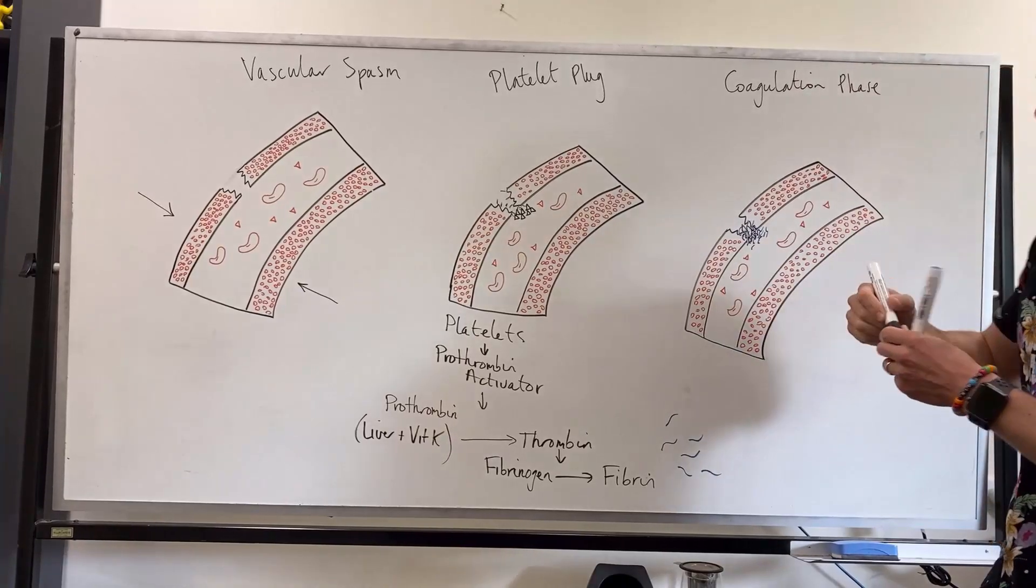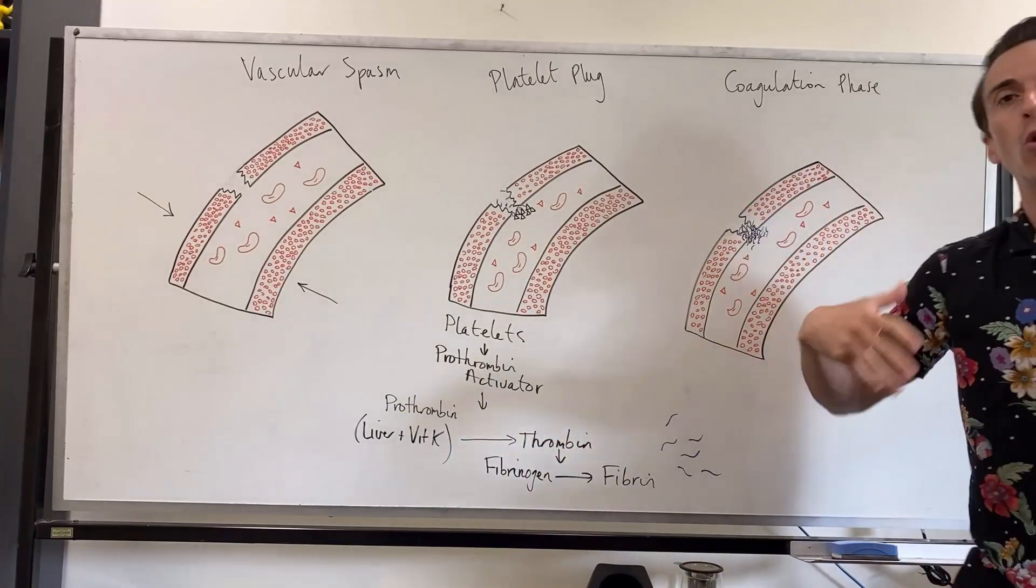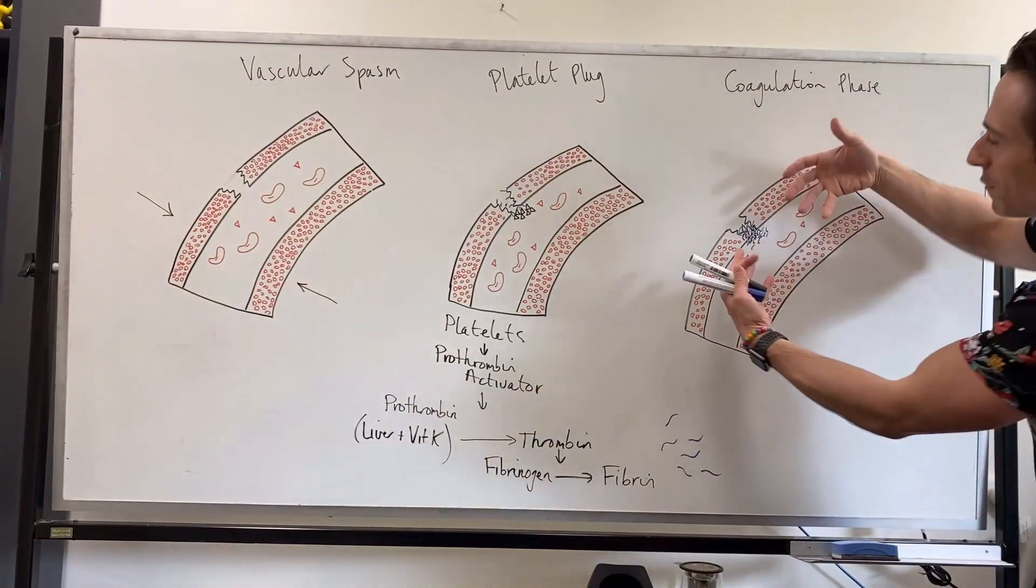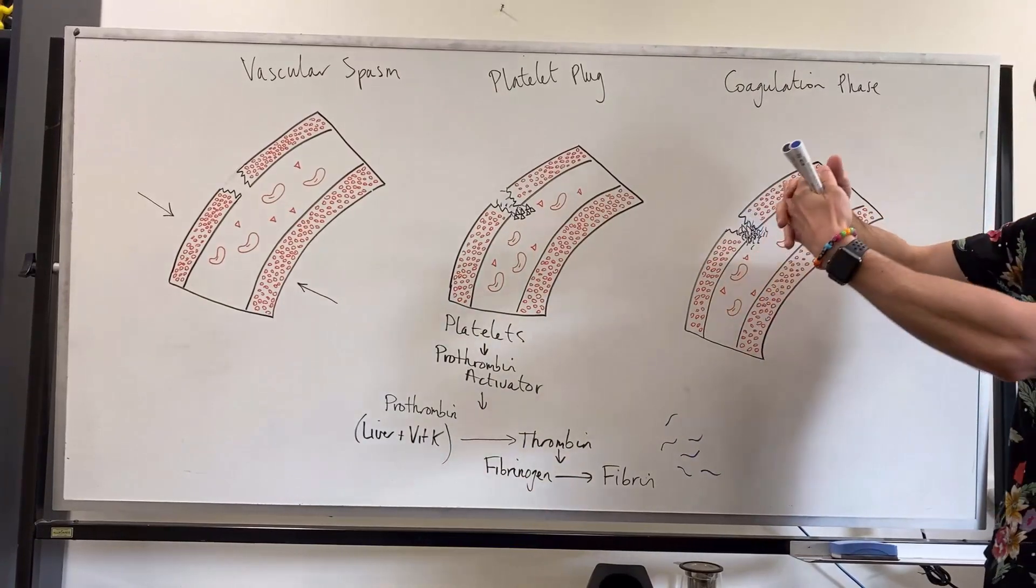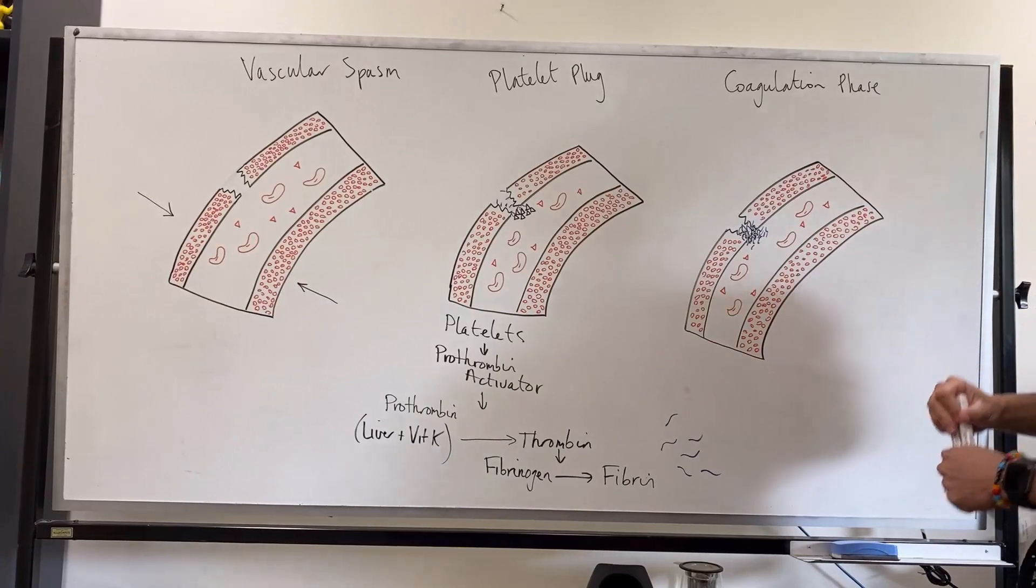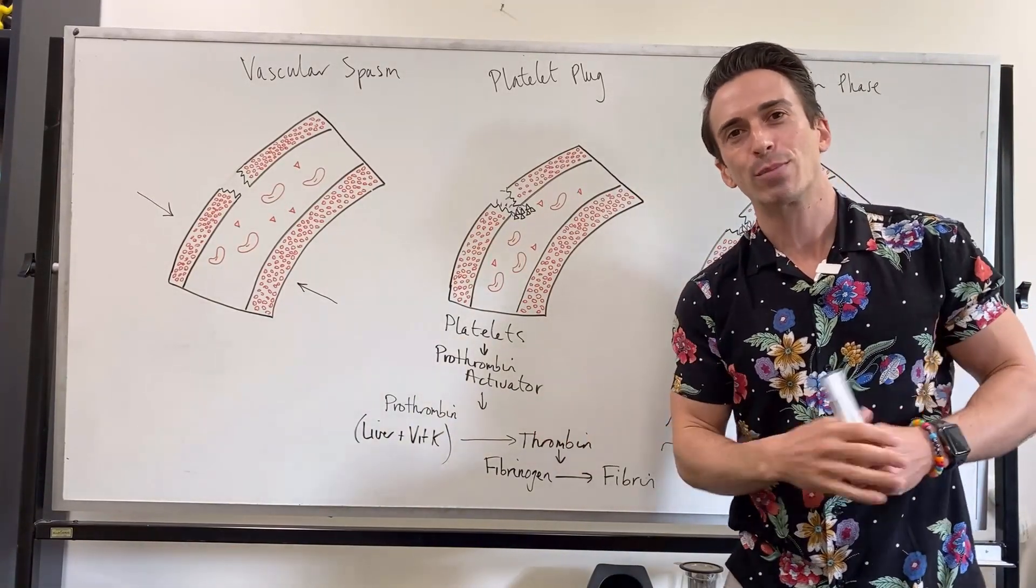And now what we have is a blood vessel wall that is now no longer bleeding or losing blood. And then we have the remodeling process occurring where we start to fix this damaged blood vessel wall by putting in that connective tissue, which is mediated by fibrin. So these are the three phases of hemostasis, also known as blood clotting.